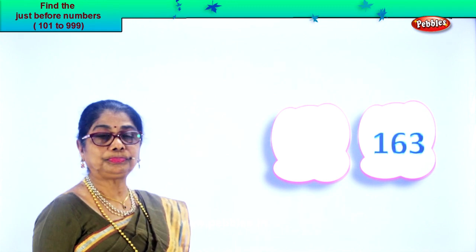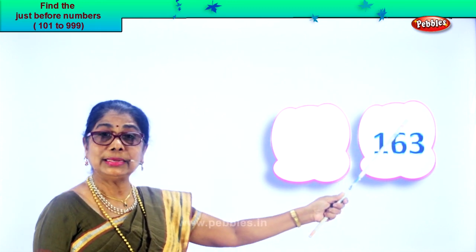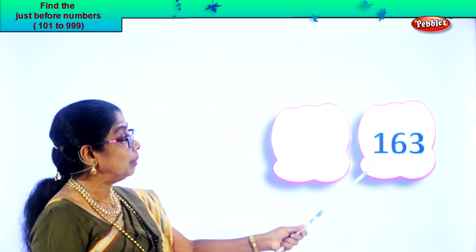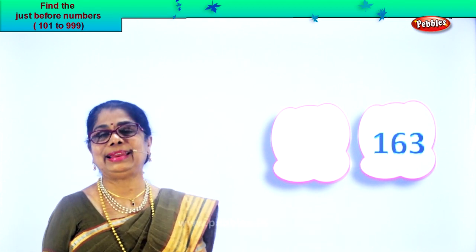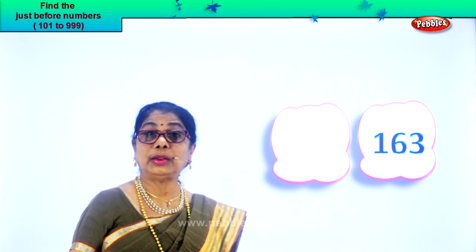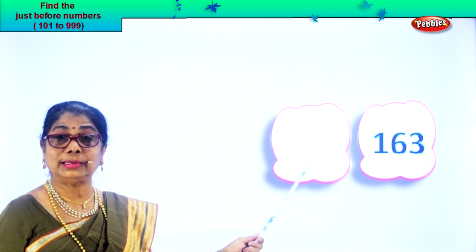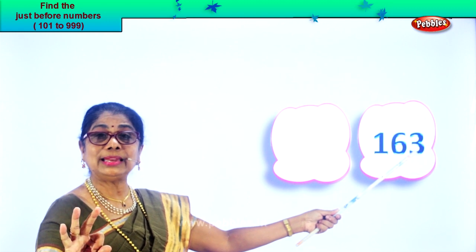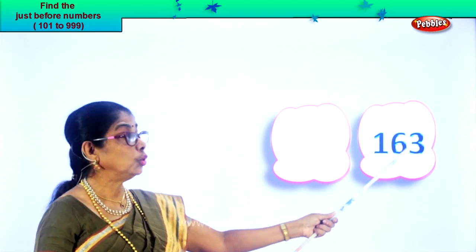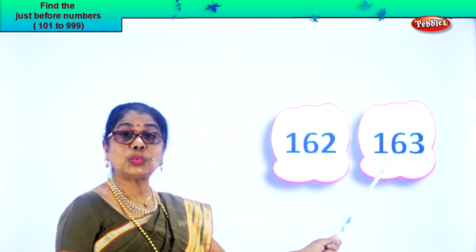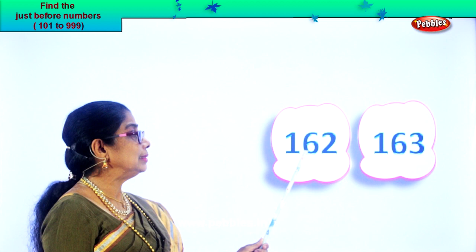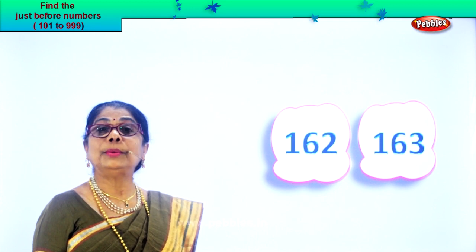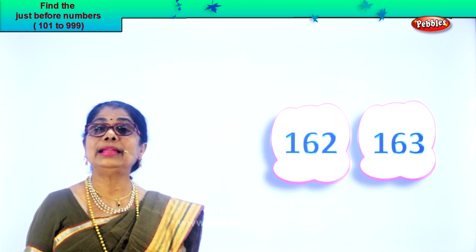Look what you have here. In the hundreds place there is one, tens place six, and in the ones place three. Read the numeral: 163. We're looking for the number before 163. In the ones place you have three — one less than three is two. So 162 is the number before. 162, 163. You're finding the number before easily?